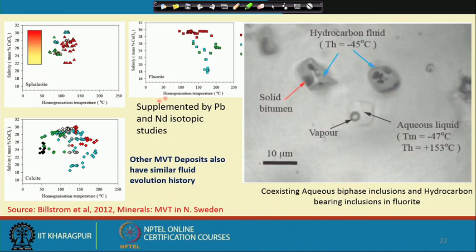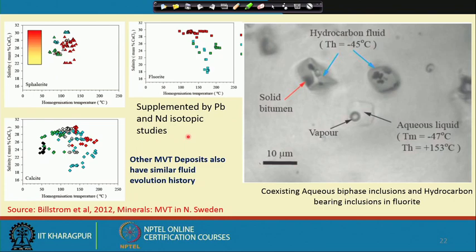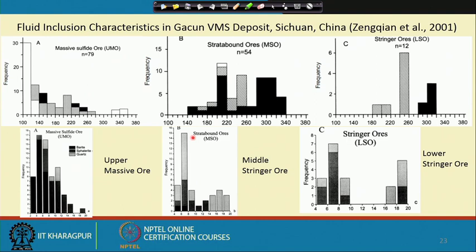When salinity and temperature data from sphalerite, fluorite, and calcite are plotted on a fluid evolution diagram, fluids of different salinities are represented. This is interpreted as mineralization brought about by fluid mixing — consistent with the composite diagram discussed earlier, where most Mississippi Valley Type deposits show a fluid mixing trend.